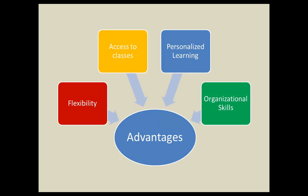The program gives our high school students access to classes that may not be available at their high school. For example, a teacher who teaches Advanced Placement Art History at one high school can open that course to all students. Our students must be enrolled in 240 minutes of traditional face-to-face classes and have the option of taking a maximum of two online courses per semester. They also need access to a computer and the internet, available at home or in the school library.